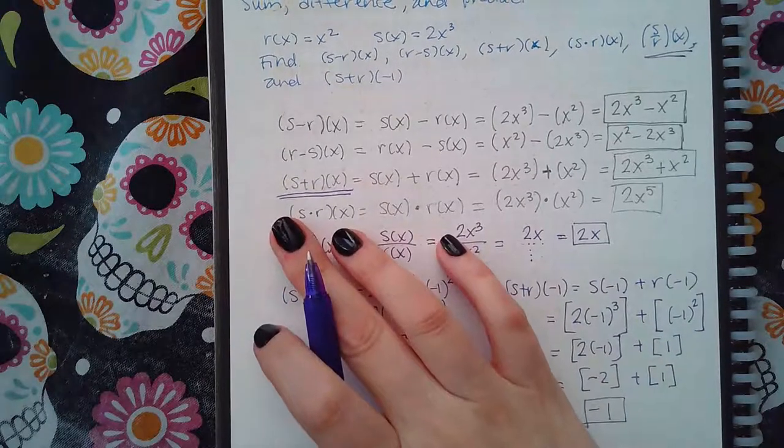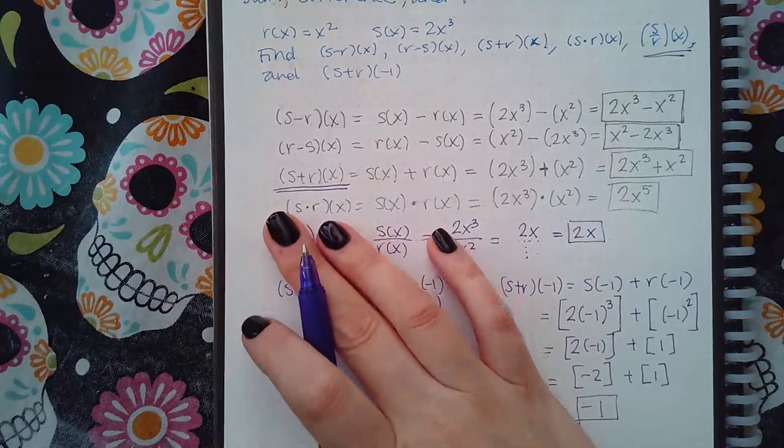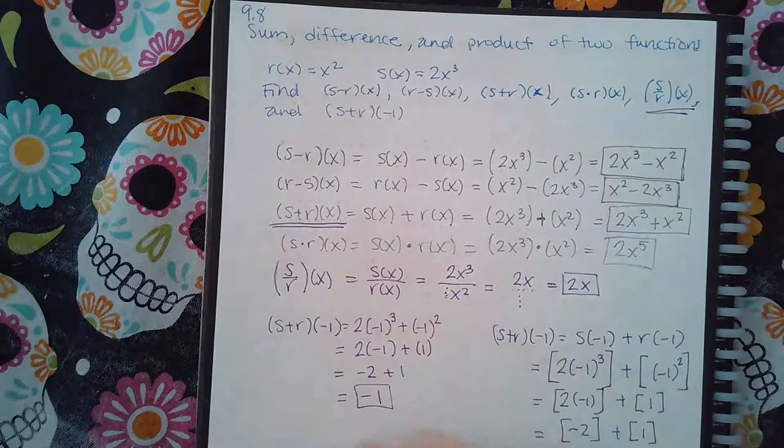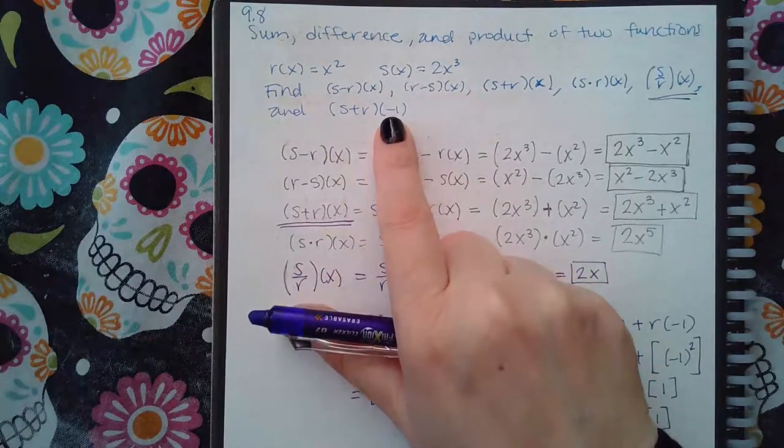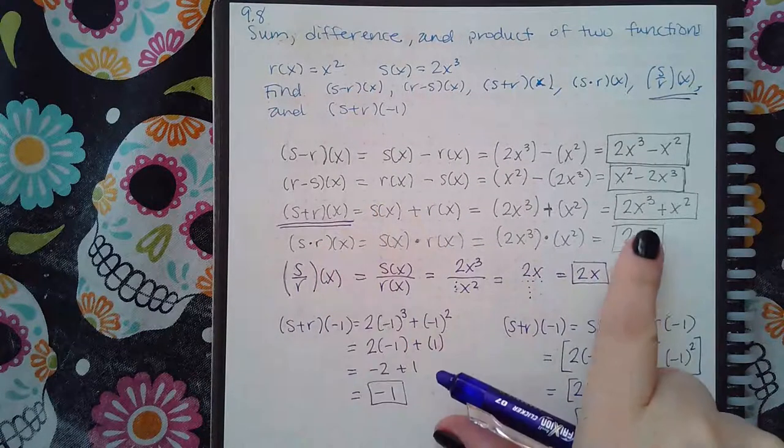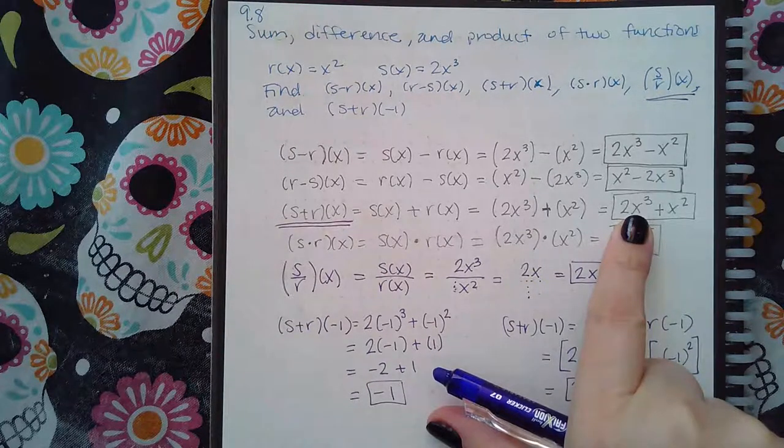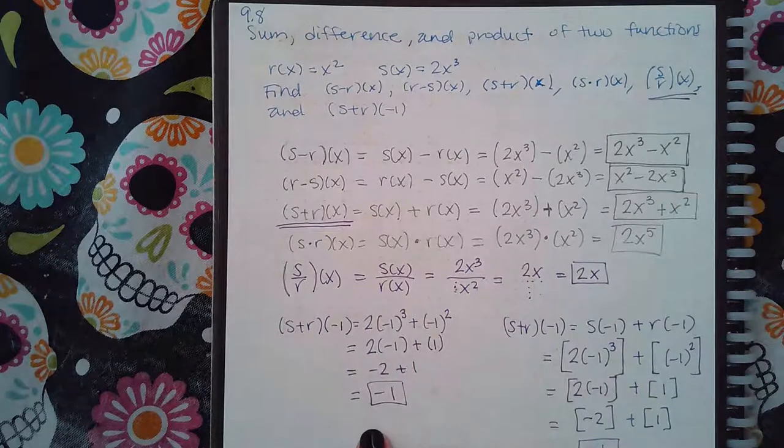Now the last one - you can do it one of two ways and it really depends on what you were given to begin with. So if you have already found what (s + r)(x) is, and they want me to find (s + r)(-1), if you've already found (s + r)(x), then you can use that expression that you found to find (s + r)(-1). All you're doing is plugging in negative 1 into that expression and then computing the final answer, which happens to be negative 1.